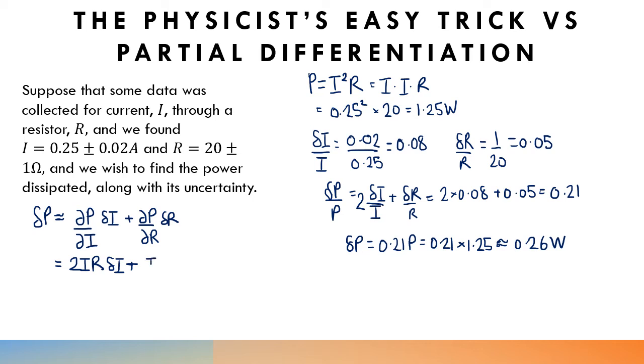So put all the values in. You've got 2 times 0.25 for the current, times 20 ohms for the resistance, and then multiplied by 0.02 amps for the uncertainty in the current. And then you've got 0.25 squared times 1. And if you put all of that together, you get 0.26 watts.